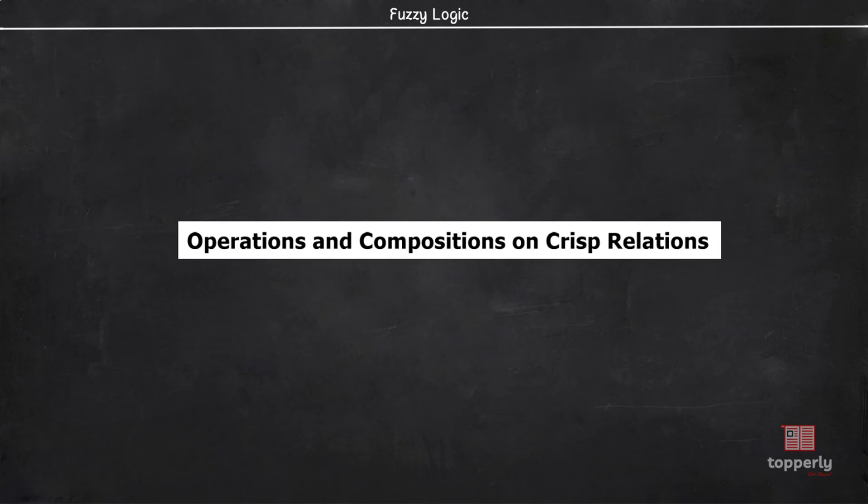Hey everyone, welcome back to Fuzzy Logic Lectures. In the last lecture, we learned about Cartesian products and crisp relations. Continuing from there, in this video, we will learn about operations and compositions on crisp relations. We will also see some solved examples to understand the topic better. So, let's start our lecture.